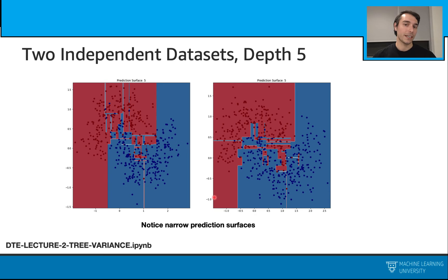Let's have a notebook exercise here. In this exercise, we have two independent datasets, and we will first fit a single decision tree on this. So our decision trees look like this. As you see, we still have these narrow prediction surfaces.